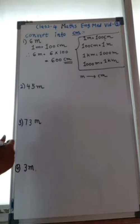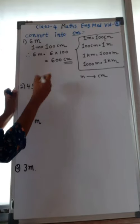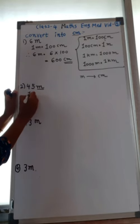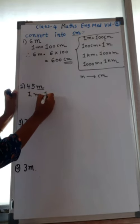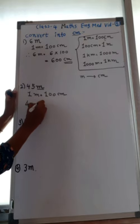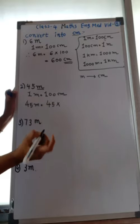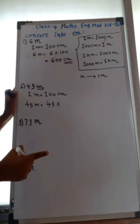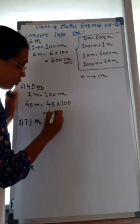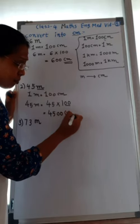The second question is 45 meter. Again, meter convert into centimeter, so we use the first formula: 1 meter equals 100 centimeter. So, 45 meter equals 45 multiplied by 100. Write 45, then add 2 zeros — answer is 4,500 centimeter.